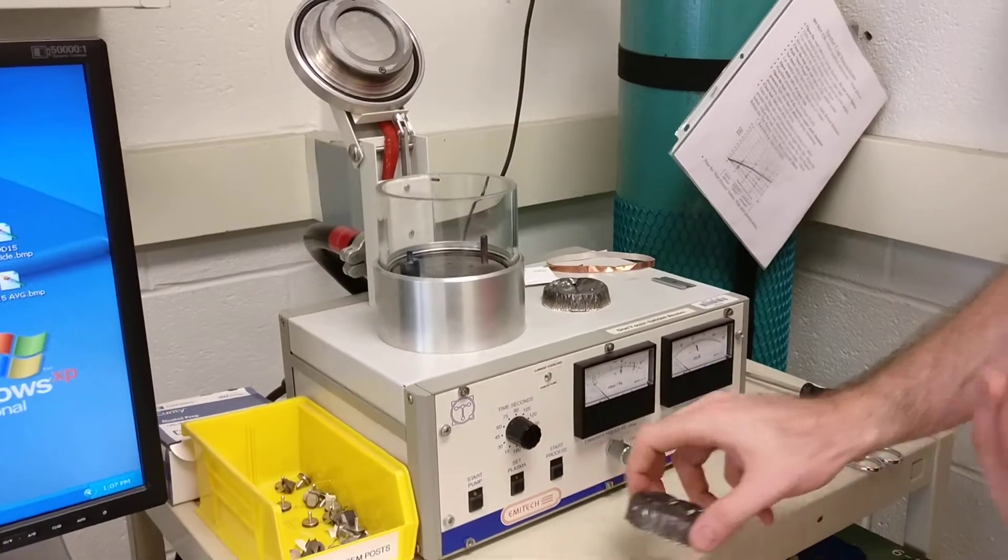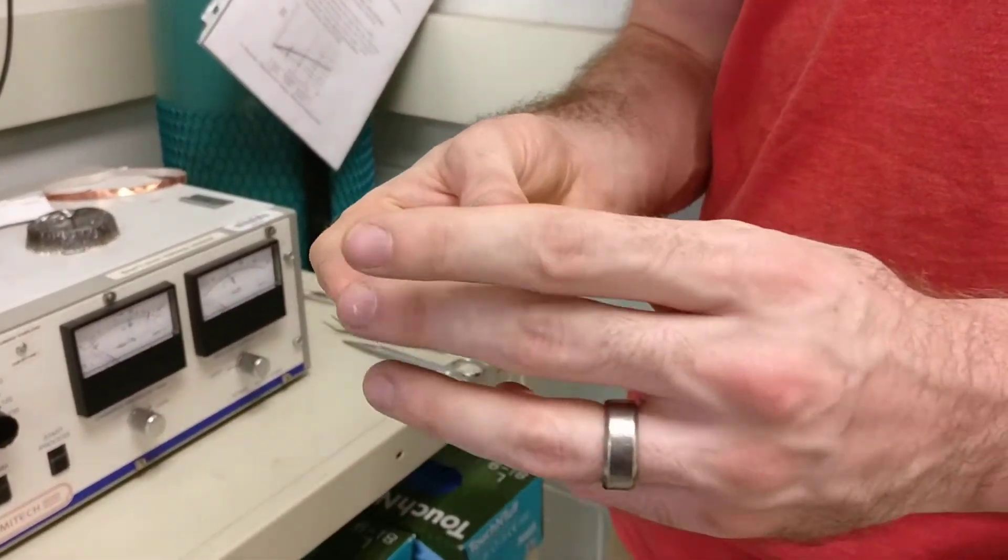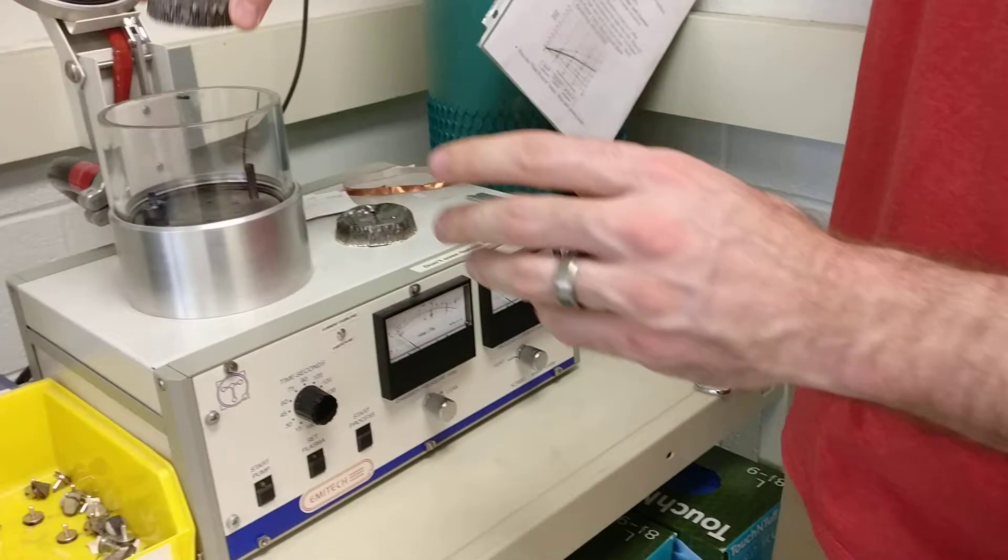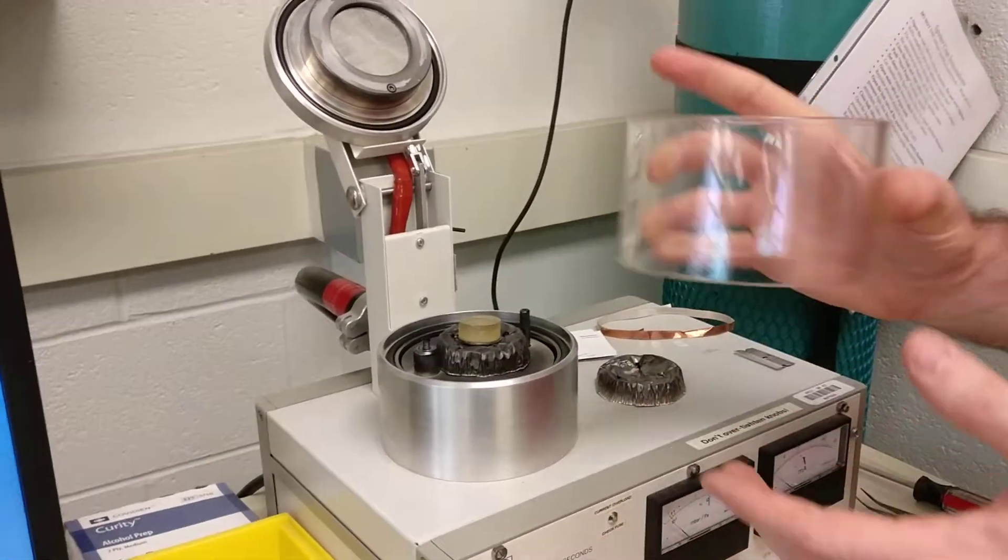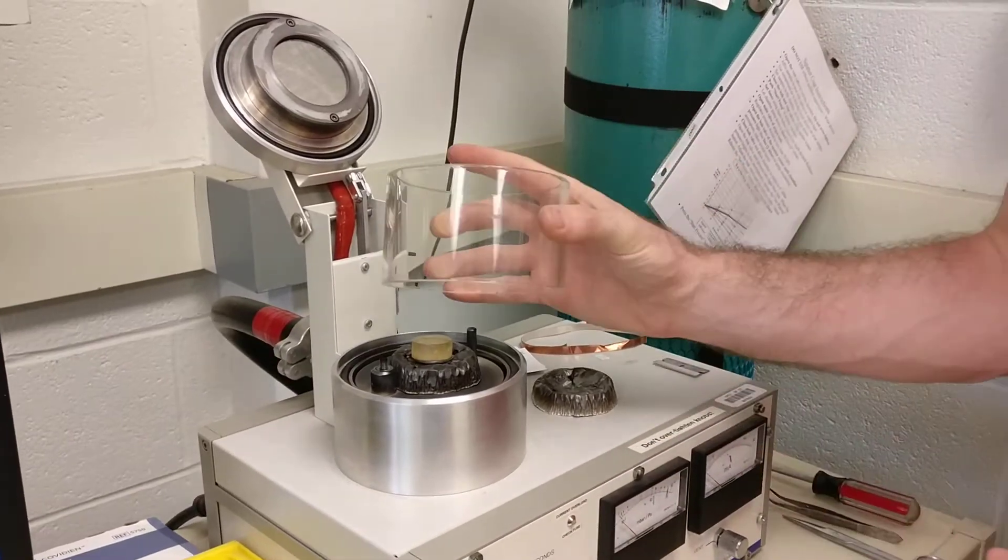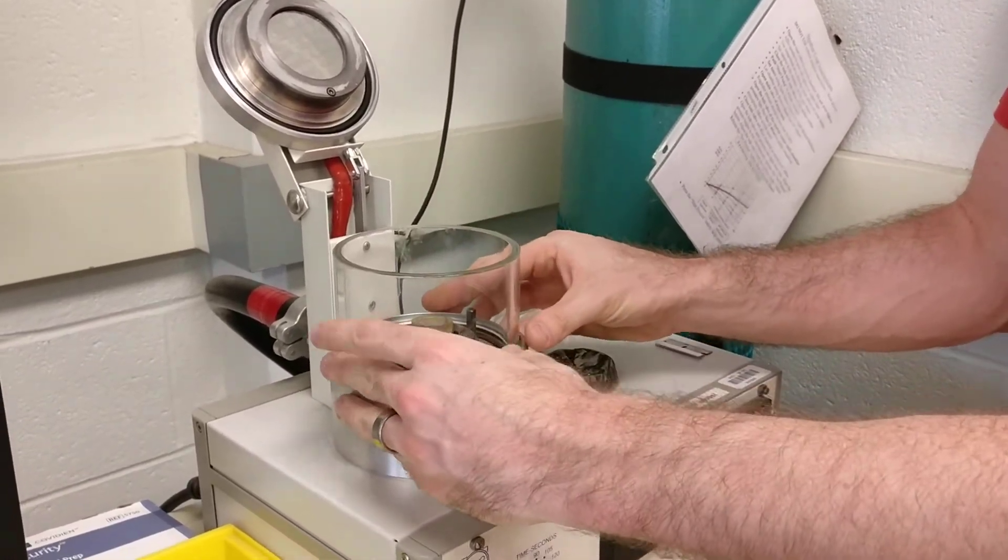We're going to put our stub into one of these little aluminum holders. That's just going to center it underneath. This ring also comes out. You can clean it with isopropyl alcohol wipes once in a while. Put it onto that O-ring on the bottom.